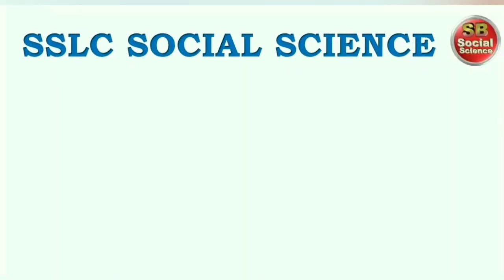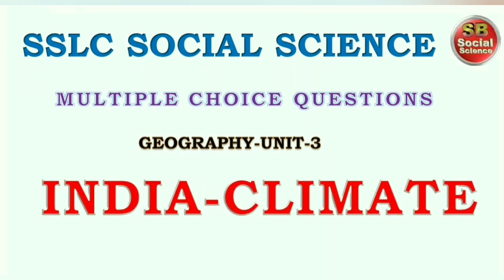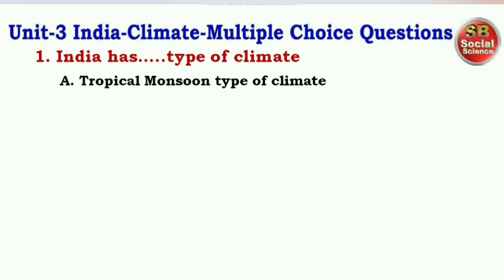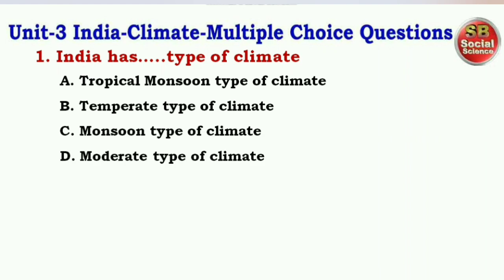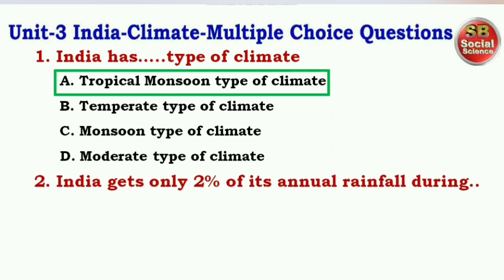Hello students, welcome back to our class. In this class we have to discuss the most important multiple choice questions from our geography third chapter: India Climate. Let's begin. The first question is: India has dash type of climate. The right answer is option A — India has tropical monsoon type of climate.